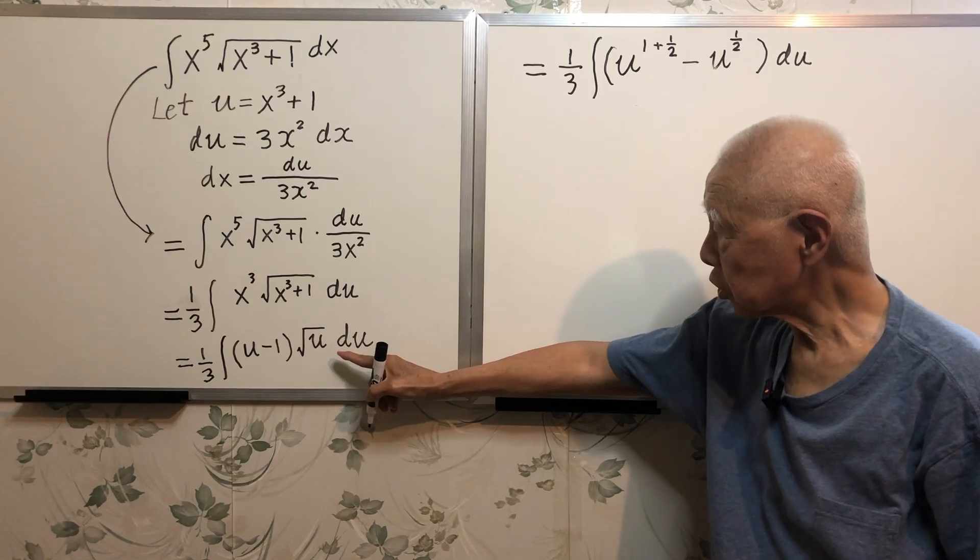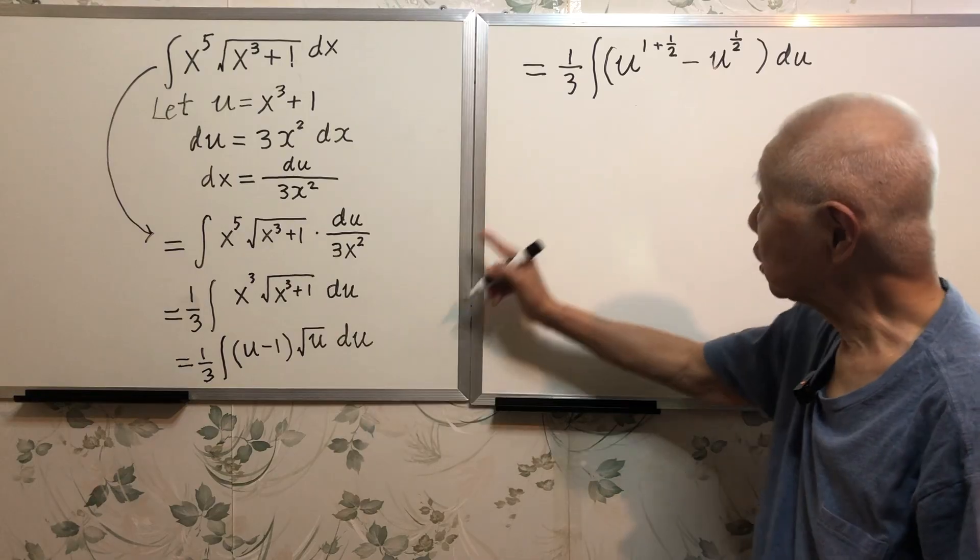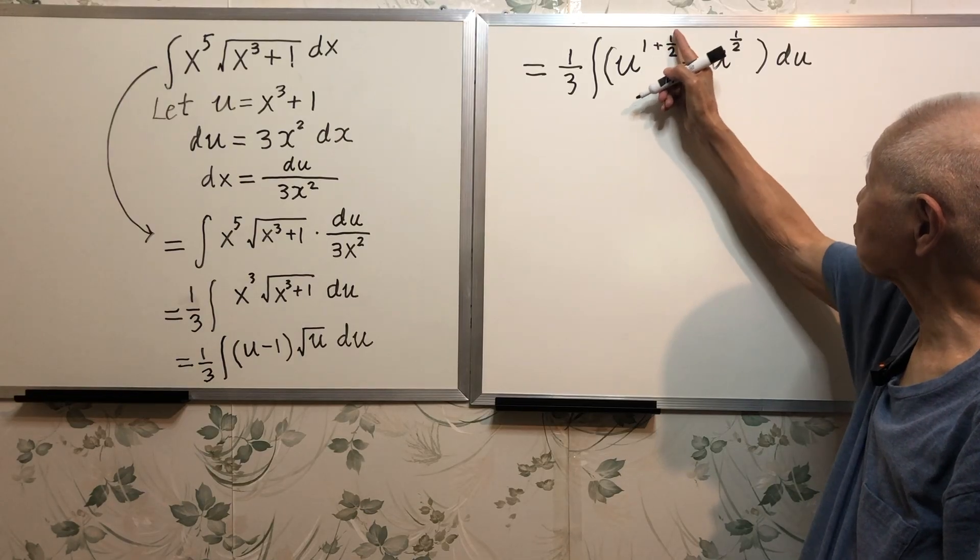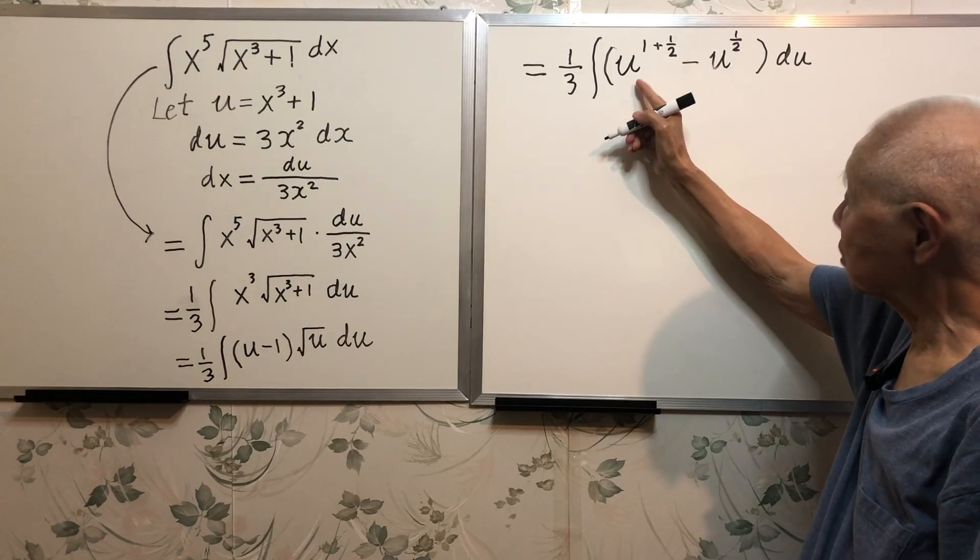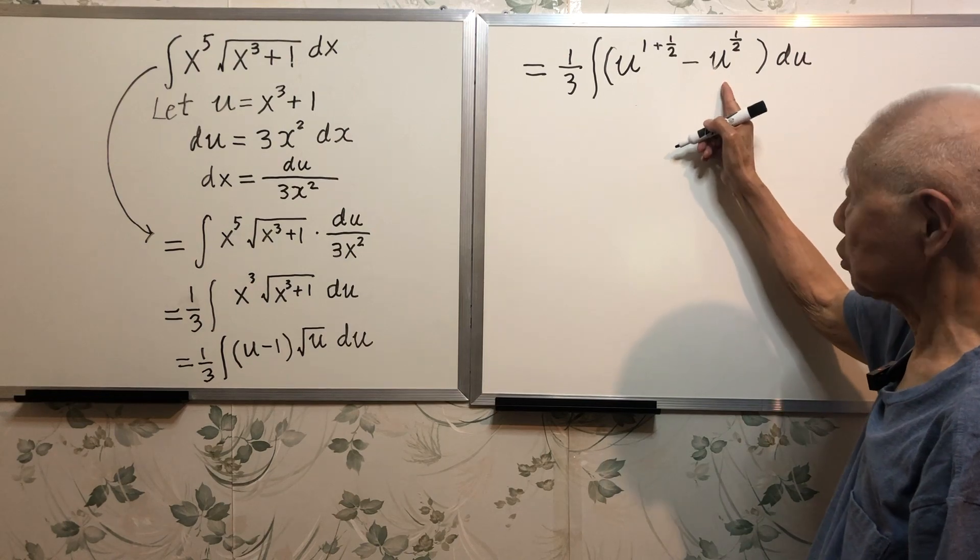Expand this. u times square root of u is u times square root, this is square root, so you add, and this times minus 1, I have minus this.